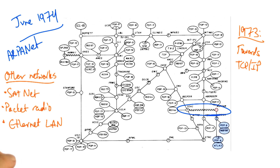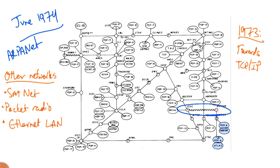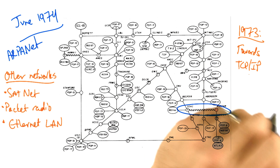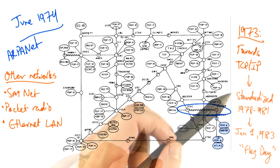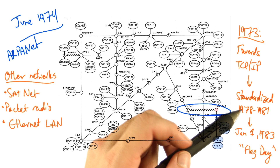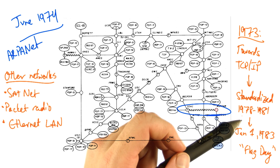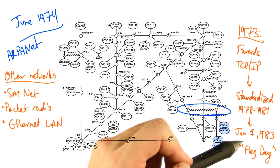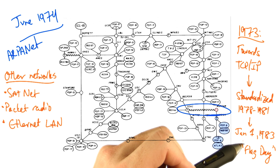Work started in 1973 on replacing the original network control protocol with TCP/IP, where IP was the inter-network protocol and TCP was the transmission control protocol. TCP/IP was ultimately standardized from 1978 to 1981 and included in Berkeley Unix in 1981. On January 1st, 1983, the internet had one of its flag days, where the ARPANET transitioned to TCP/IP.